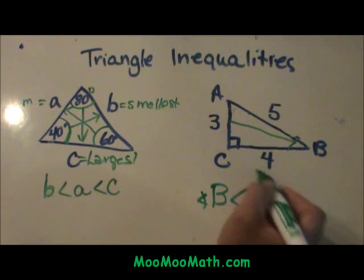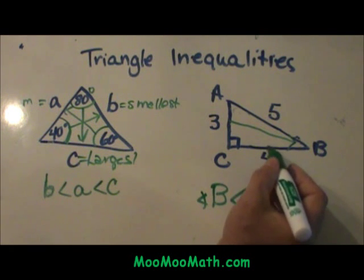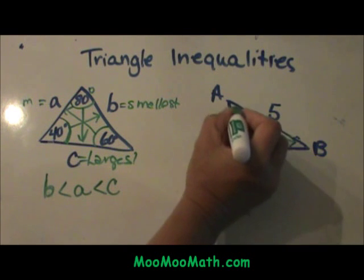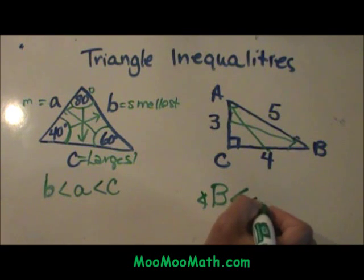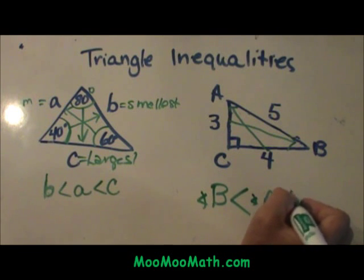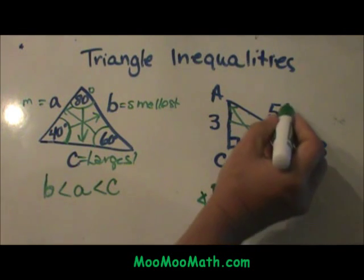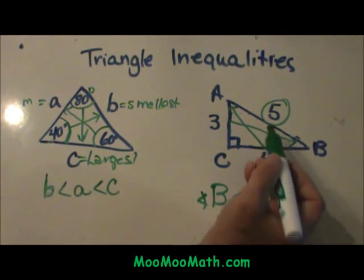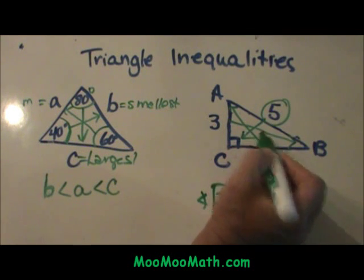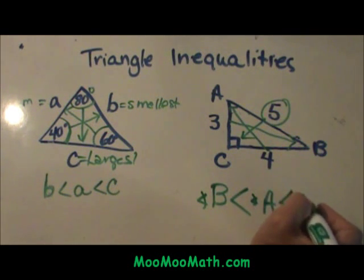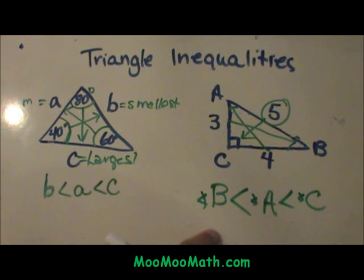I go to my next smallest side which is 4. It is opposite angle A, so angle A is my medium sized angle. And my largest side is the side that is 5, and it is opposite angle C or the right angle. So that is the order of the angles, and here is the order of the sides.